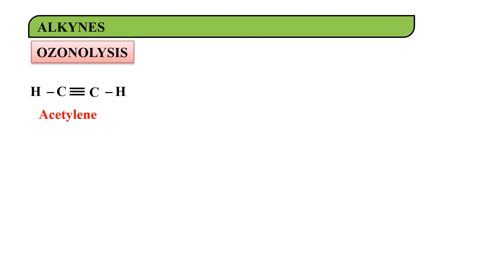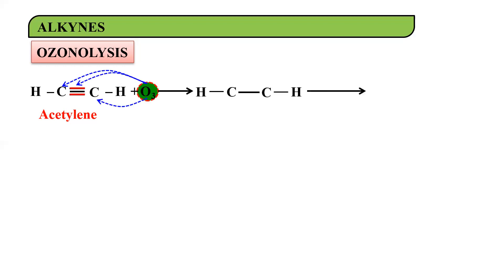In ozonolysis, you have a molecule of acetylene — a carbon-to-carbon triply bonded compound — to which you are adding ozone O₃. O₃ will add across the triple bond, giving you a compound. Remember, when we talk about alkynes, the addition of ozone or oxygen takes place in the form of a triangle.